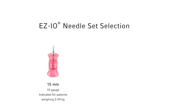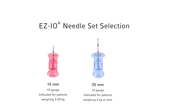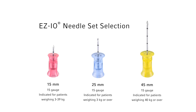Critical judgment should be used to determine appropriate needle set selection based on patient weight, anatomy, and tissue depth overlying the insertion site. To facilitate selection of the correct length needle set, tissue depth over the insertion site should be assessed prior to selection of the needle set.